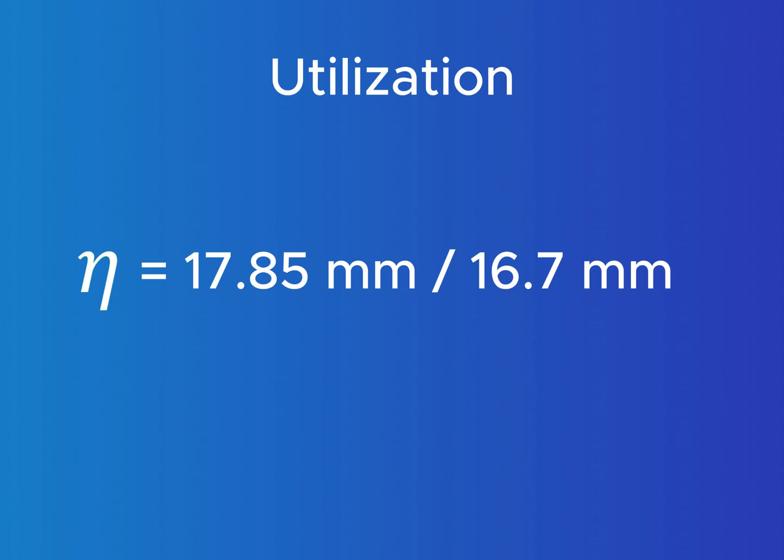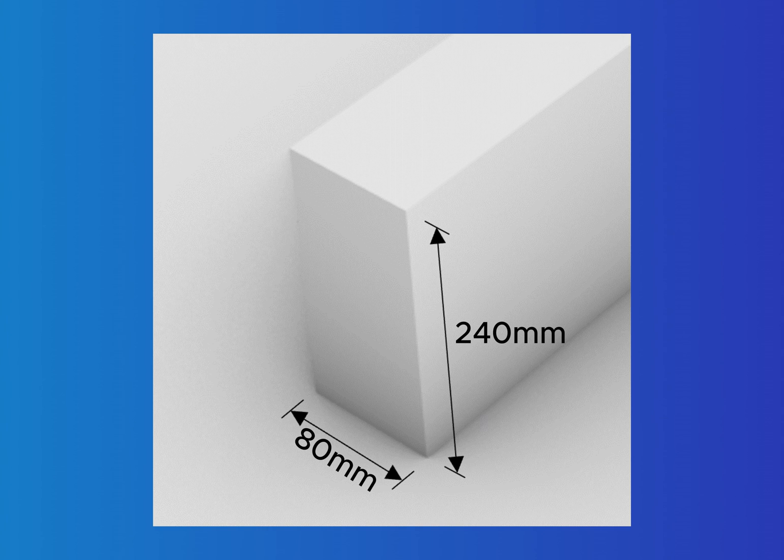Now when we calculate the utilization, we find out that it's greater than 1. This means that the beam doesn't fulfill the deflection criteria and we have to change the cross-sectional parameters.